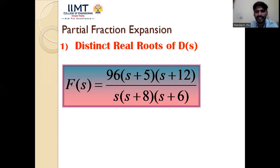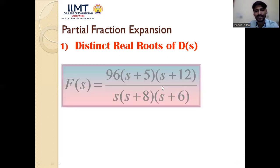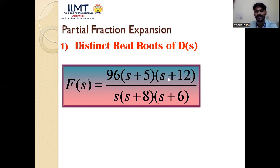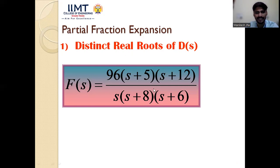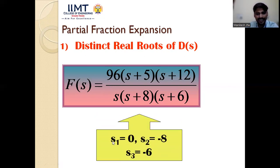Example 2: F(s) = 96(s+5)(s+12) / [s(s+8)(s+6)]. We solve using the partial fraction method. The poles are the roots of the denominator: s = 0, s = −8, and s = −6 — three distinct poles. We write F(s) = k₁/s + k₂/(s+8) + k₃/(s+6) and solve for k₁, k₂, and k₃.